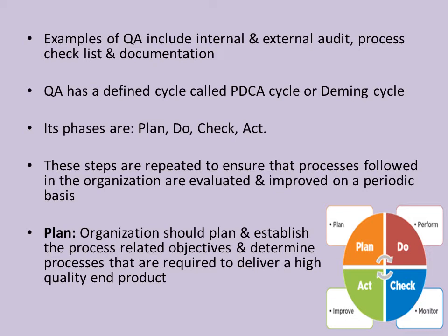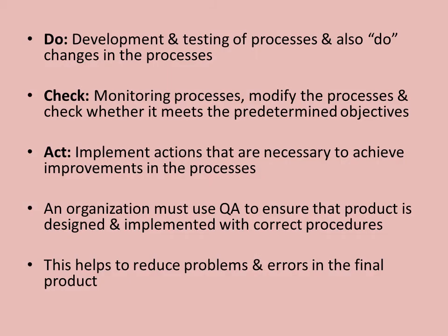After planning, the organization performs the process to get the end product of desired quality. The next part of the cycle is Do, which deals with the development and testing of processes. Changes in processes may also be made here. The third step, Check, deals with monitoring processes carefully.